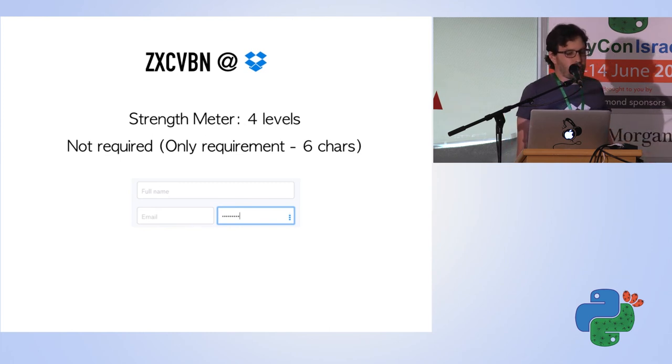So how do we use zxcvbn at Dropbox? At Dropbox, we have a strength meter, as you can see on the side, like four bars. We don't require you to use any strength—we don't enforce anything. We just advise you to use a stronger password. The only requirement is six characters. Each password needs to be six characters, that's all.